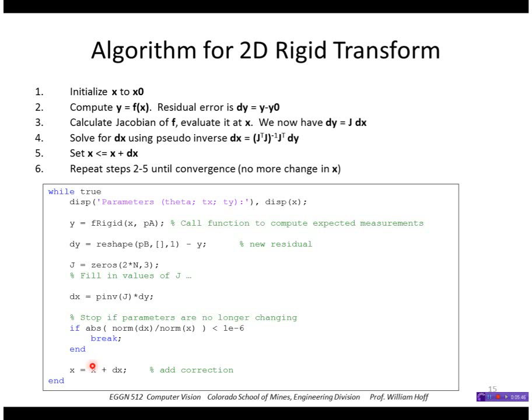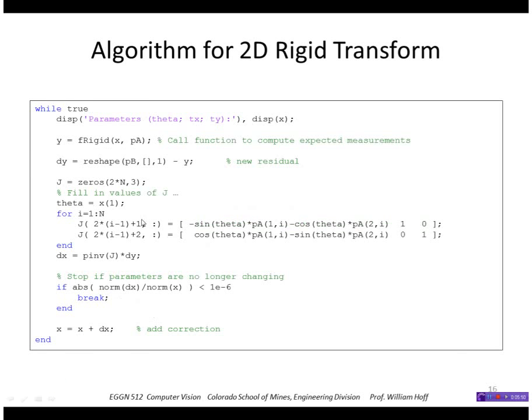And then tests to see if the parameters are no longer changing, and finally adds the correction to x. So this portion shows the missing piece that fills in the value of J.